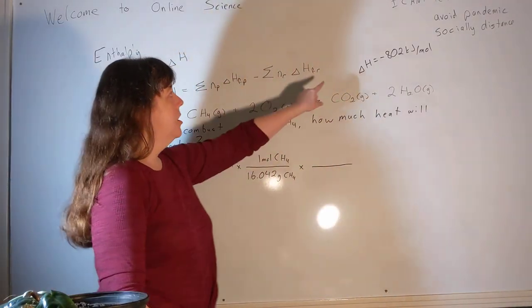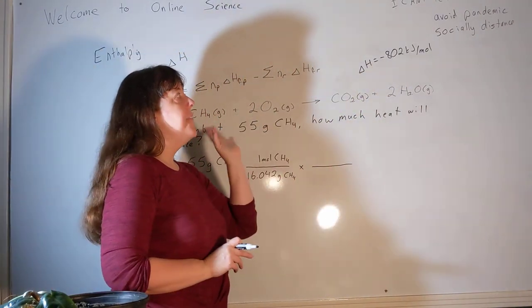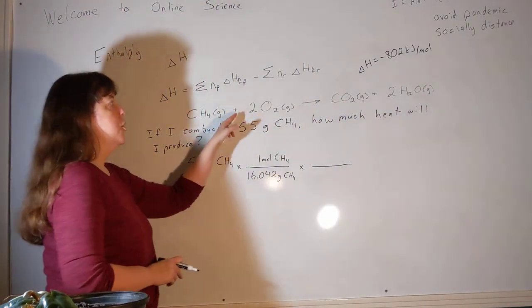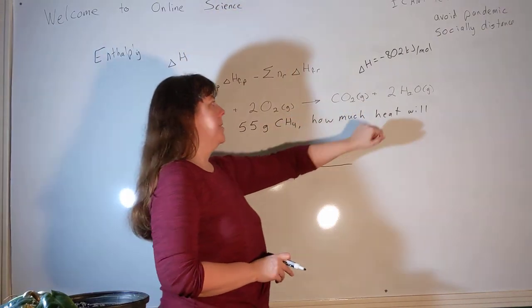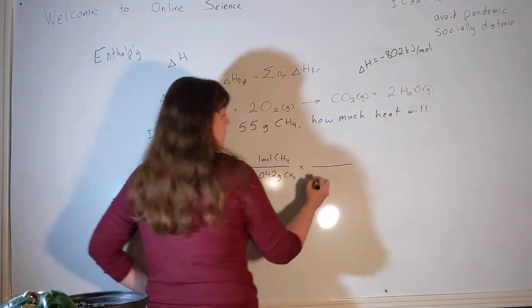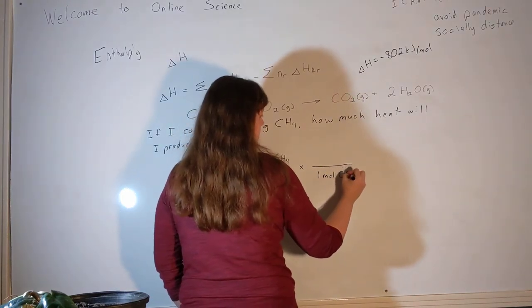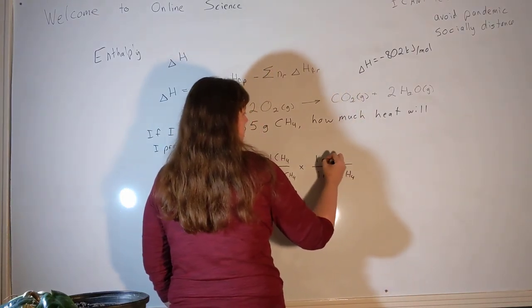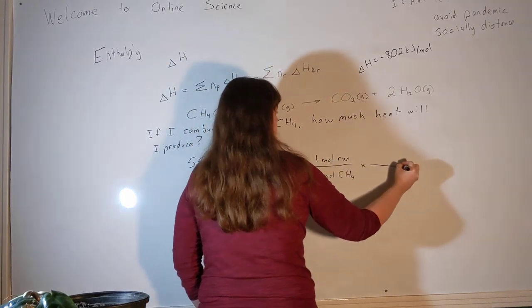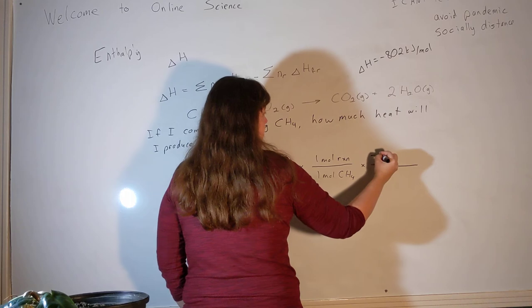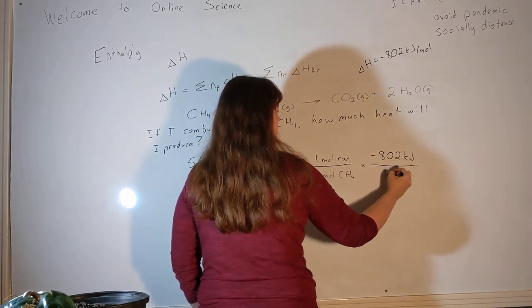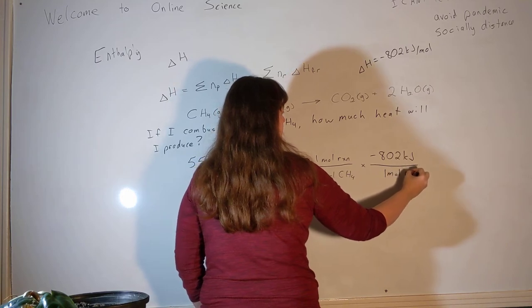Now delta H is in kilojoules per mole and that mole is one mole of the reaction as written, which means it would be one mole of methane, two moles of oxygen, one mole of carbon dioxide, or two moles of water vapor. So I need to go from one mole of methane to one mole of reaction. And then the delta H value tells me that I'm going to give off 802 kilojoules of heat for every one mole of reaction.